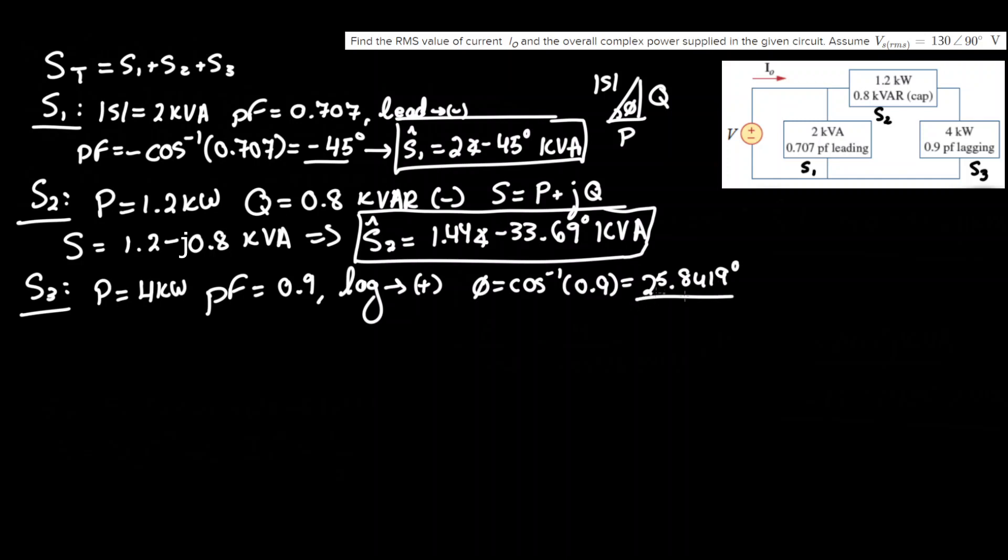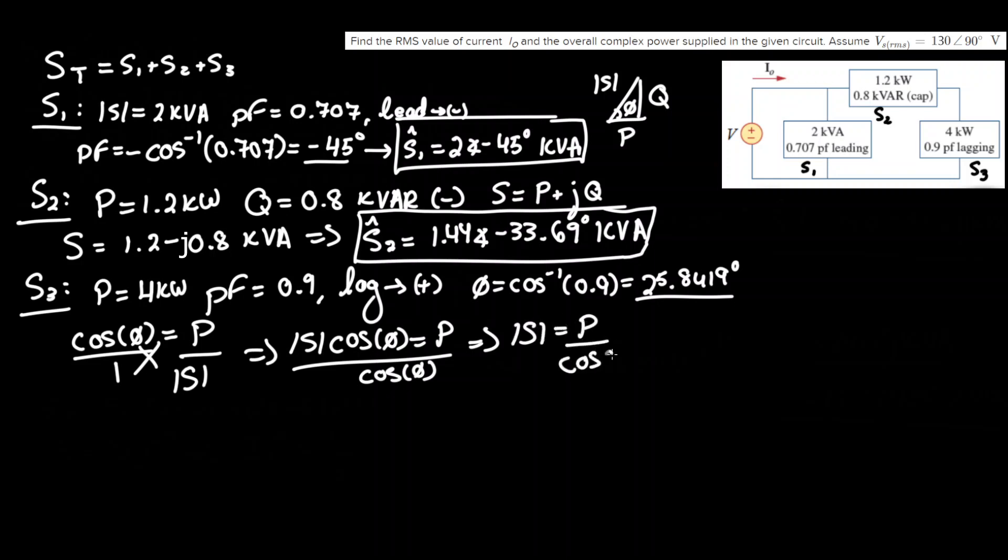So let's first get the phasor angle phi in which phi again equals cosine inverse of 0.9, it's positive, and that turns out to equal 25.8419 degrees. Now for the amplitude S we're going to refer to this triangle. We can see that the cosine of phi is P over S.